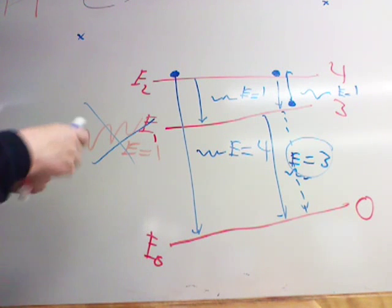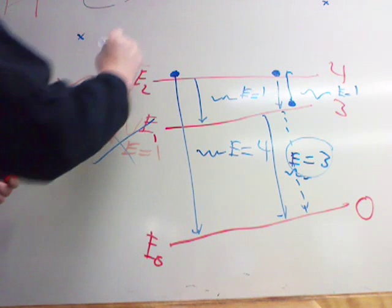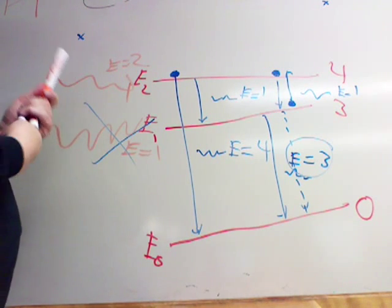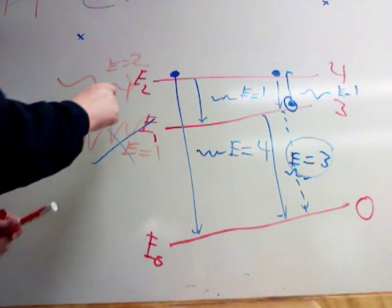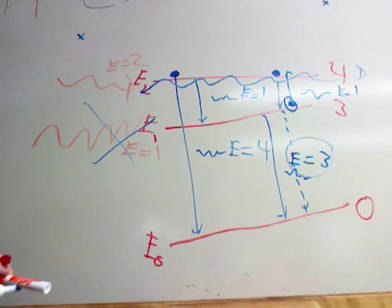And so, if we have a photon with incoming energy equal to two units, and the electron is in this stage, that photon will simply pass right through the atom. No interaction is possible.